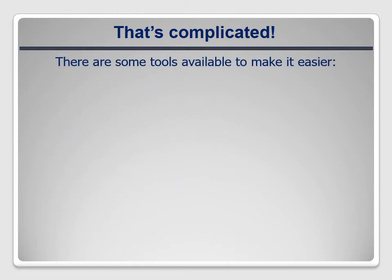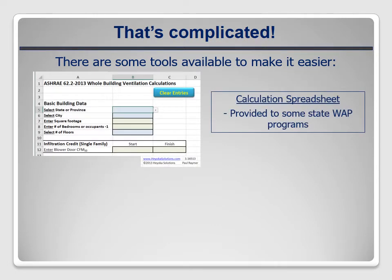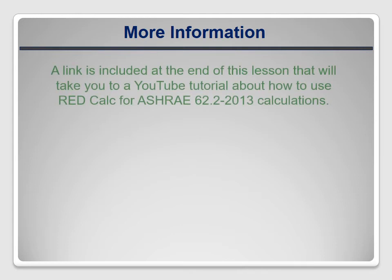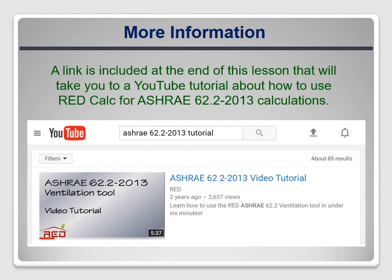Your program may provide their own spreadsheet or other software to help. The New Jersey and Oregon WAP programs make available a spreadsheet created by Paul Raymer, who is on the ASHRAE committee and does ventilation training. An internet search for 'ASHRAE 62.2 spreadsheet' should bring it up. Alternatively, Rick Karg, also on the ASHRAE 62.2 committee, has created a free web-based calculator called REDCalc at residentialenergydynamics.com. A link at the end of this lesson leads to a YouTube video tutorial explaining how to use REDCalc for ASHRAE 62.2 calculations — highly recommended, especially if this is your program's preferred tool.